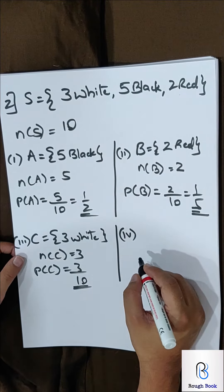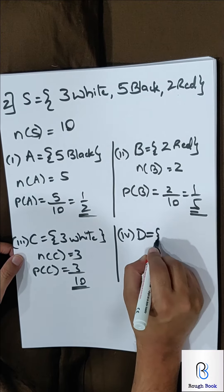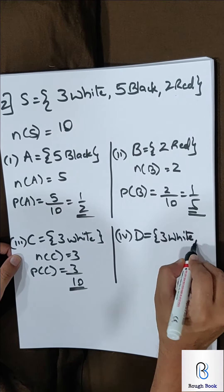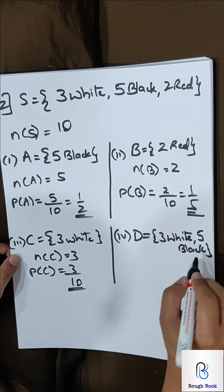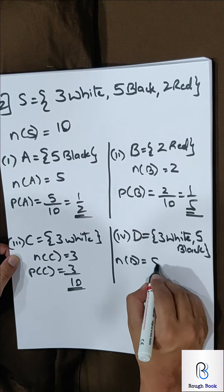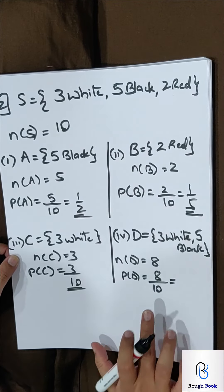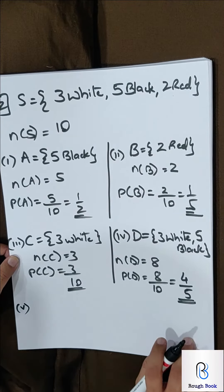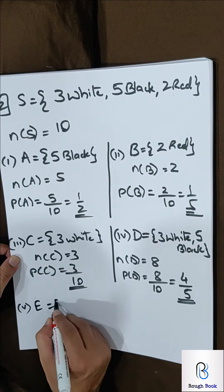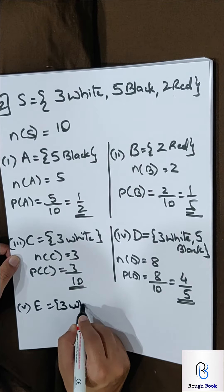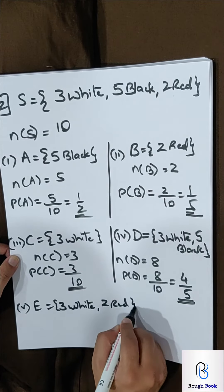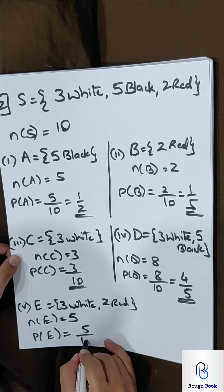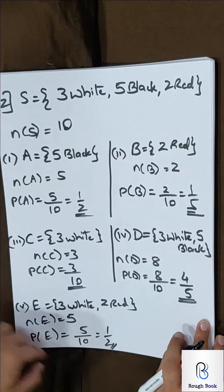Event D: not a red ball. Using negation — not red means it can be 3 white or 5 black, either of them. So number of D = 5 + 3 = 8. Probability of D = 8 by 10, which must be reduced to 4 by 5. Event E: not a black ball — so it can be 3 white or 2 red. Total number of E = 3 + 2 = 5. Probability of E = 5 by 10 = 1 by 2. Who got all correct?